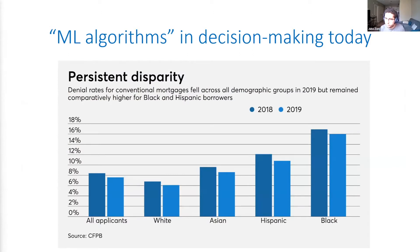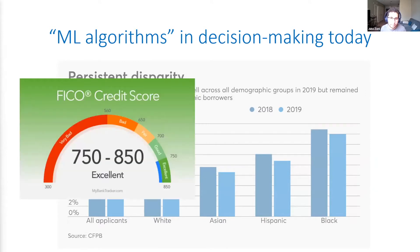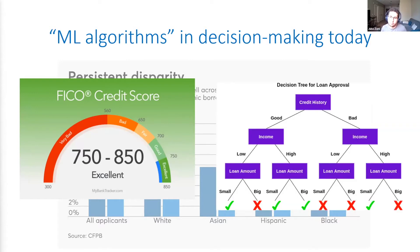Another example is loan decisions. Algorithms play a role there too — an obvious one is credit scores. Loan decisions depend partially on credit scores, and credit scores themselves are an algorithm that grades someone's creditworthiness. On top of that, banks also have their own machine learning algorithms that look at applicant attributes and credit scores to decide who to give a loan to.